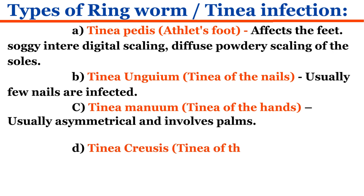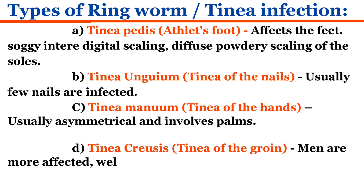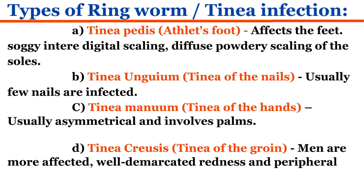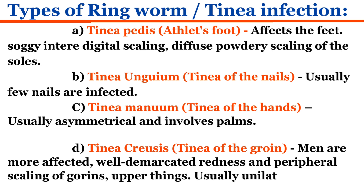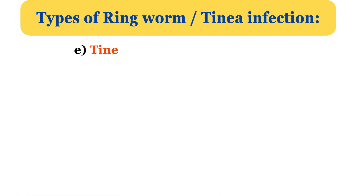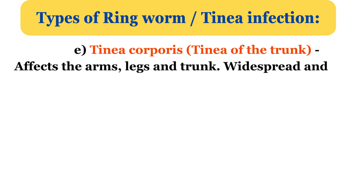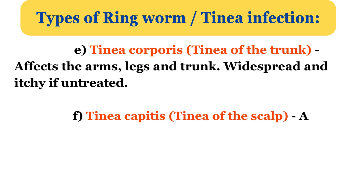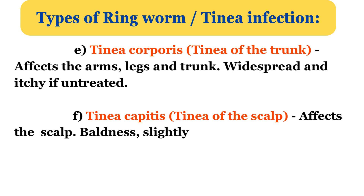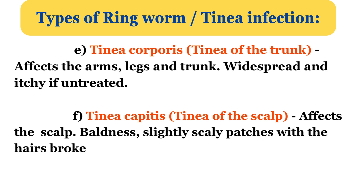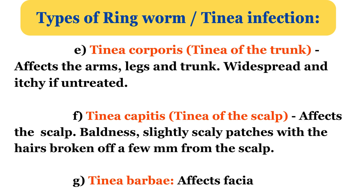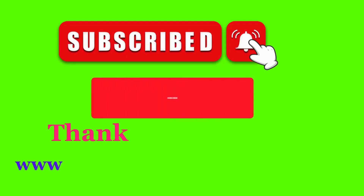D. Tinea cruris, tinea of the groin; men are more affected. Presents with well-demarcated redness and peripheral scaling of the groins and upper thighs; usually unilateral and itchy. E. Tinea corporis or tinea of the trunk; affects the arms, legs and trunk. Widespread and itchy if untreated. F. Tinea capitis or tinea of the scalp; affects the scalp. Presents with baldness and slightly scaly patches with hairs broken off a few millimeters from the scalp. G. Tinea barbae, affects facial hair.